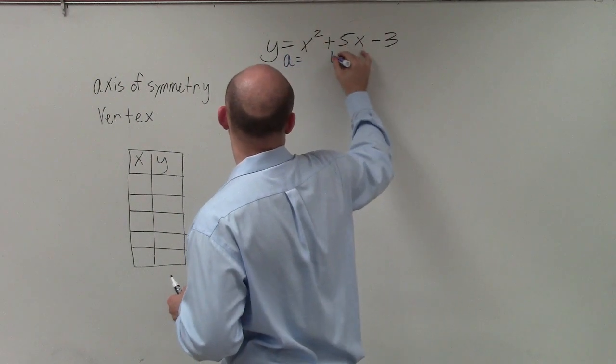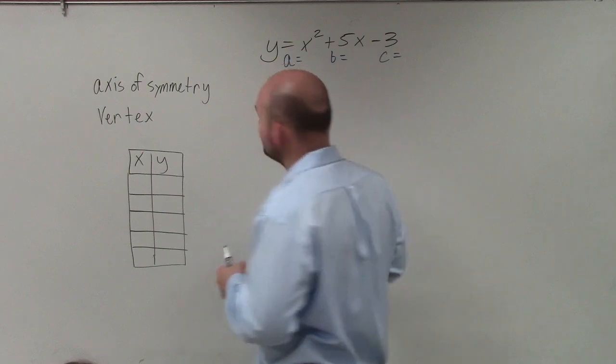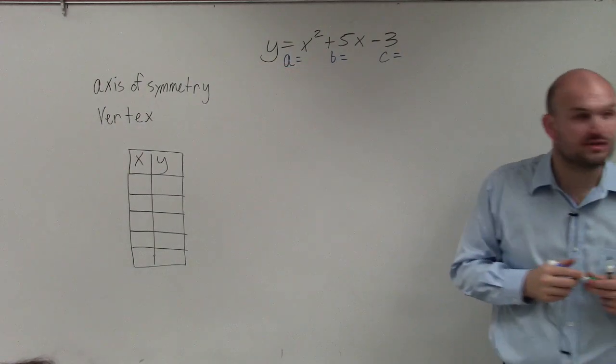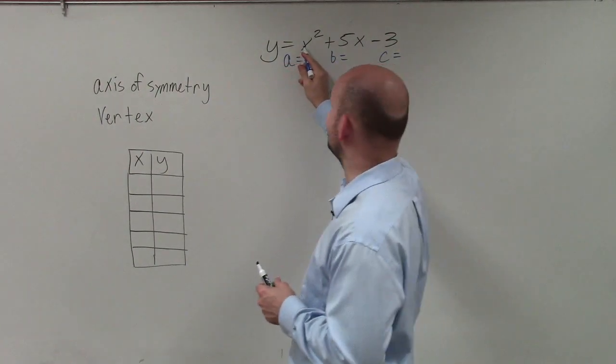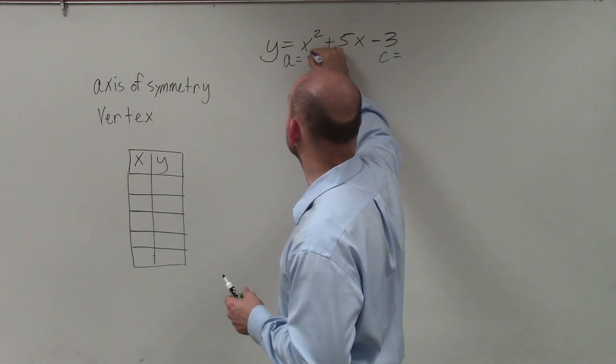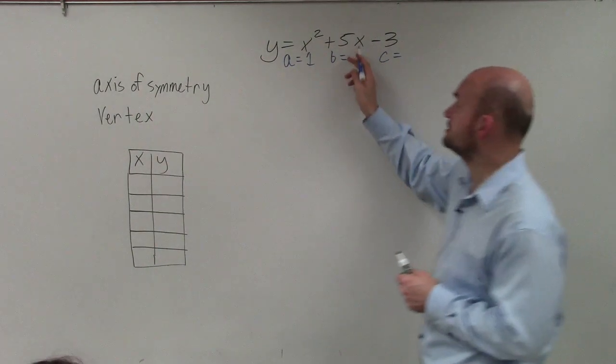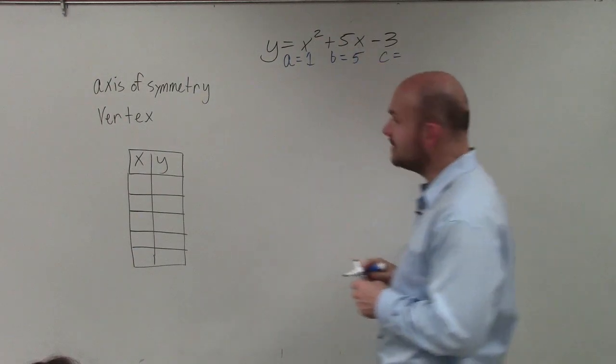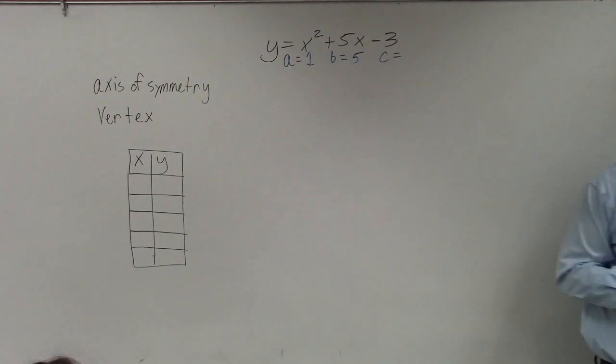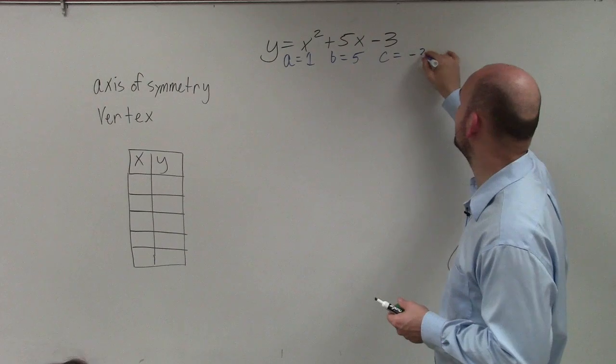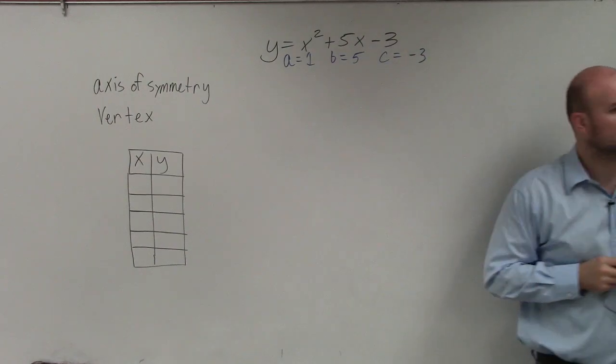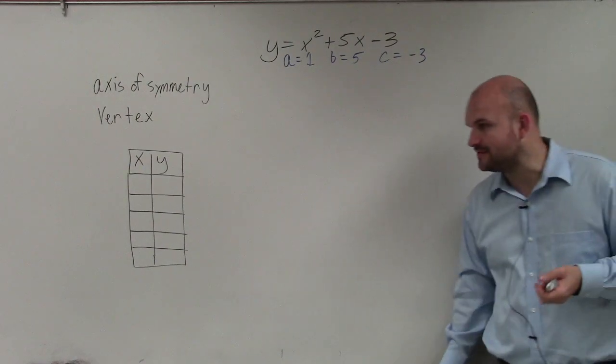So I can say a, b, and c. Now remember, a is the coefficient of my quadratic term, which is my x squared. So my coefficient, in this case, is 1. b is the coefficient of my linear term, which is x. So in this case, it is 5. And c represents my constant, which in this case is negative 3. Fair enough. That's the easy part.